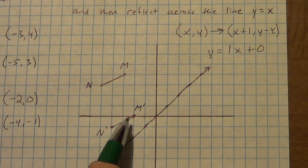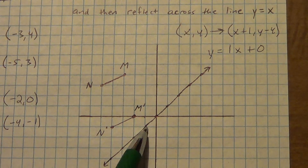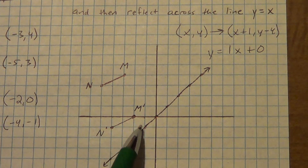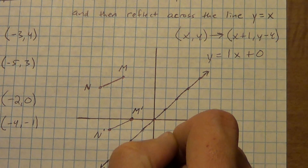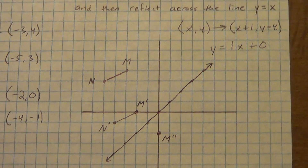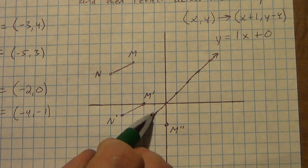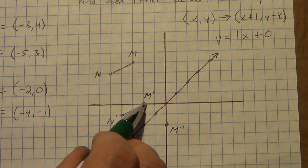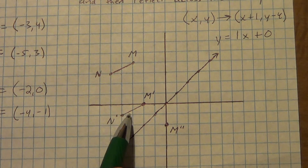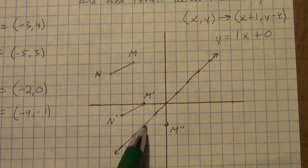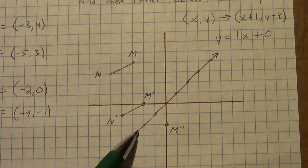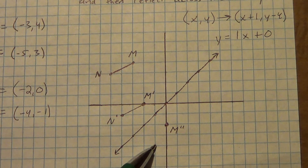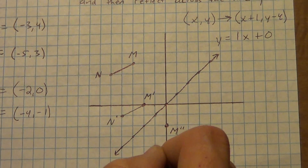So instead of right 1, up 1, I'm going to go right 1, down 1 — that's a slope of negative 1. For M prime at (negative 2, 0): going right 1, down 1 gets me to the line, so I'm 1 diagonal unit away, meaning I do that again — right 1, down 1 — and put my point there. We call that M double prime, like a double quotation mark. For N prime, it's about 1 and a half diagonal units away, so I go 1 and a half units the other direction — that's N double prime.